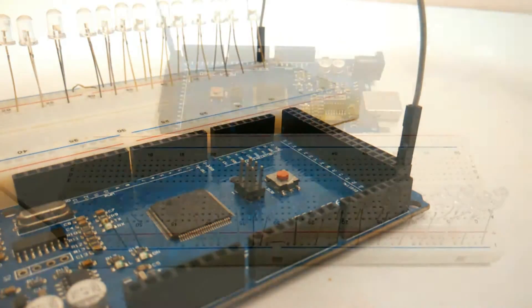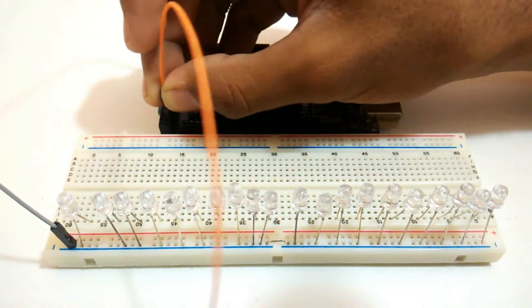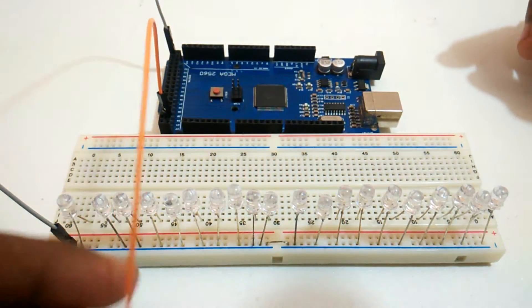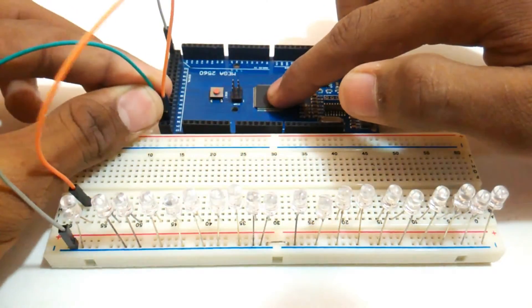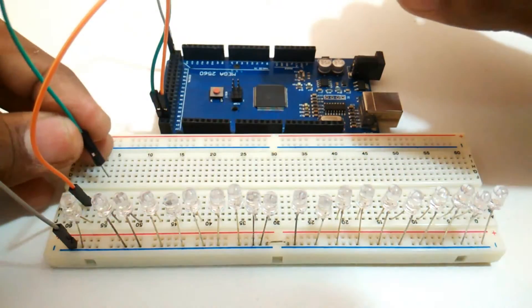The wiring part is quite simple because we are going to use the digital pins of the Arduino directly to the LEDs. The pins which I have used are from pin number 22 till pin number 41.